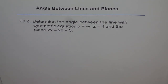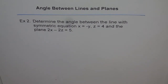Angle between lines and planes, Example 2. Determine the angle between the line with symmetric equation x equals minus y, z equals 4, and the plane 2x minus 2z equals 5.